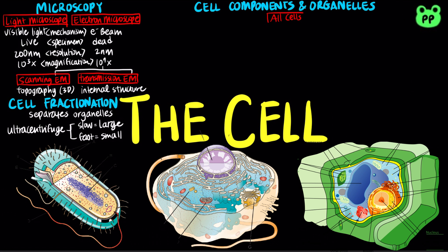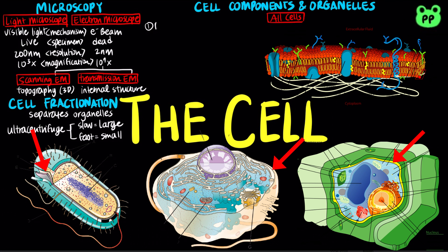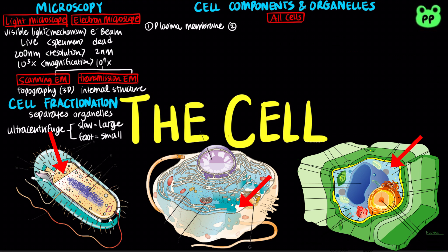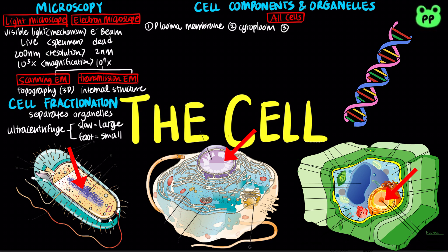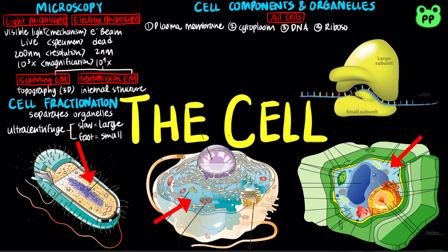All cells contain four basic components: a plasma membrane, which separates the interior of the cell from the outside environment; cytoplasm, the gelatinous liquid that fills the inside of a cell; DNA, which is the hereditary material in all organisms; and ribosomes, which make proteins.